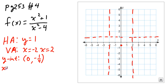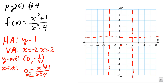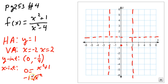For x-intercepts, I put 0 in for y and solve for x. I get 0 equals x squared plus 1 over x squared minus 4. Cross-multiplying, the denominator disappears, so I just get the numerator equals 0. But when I go to solve x squared plus 1 equals 0, I get x squared equals negative 1, and when I square root, that becomes an imaginary value. So there are no x-intercepts — my graph won't cross the x-axis anywhere.